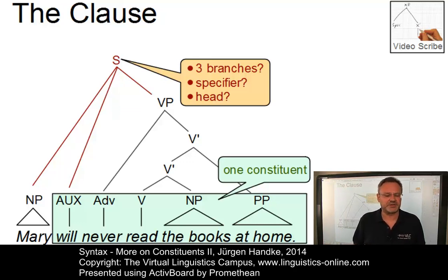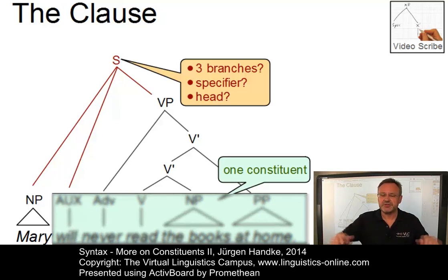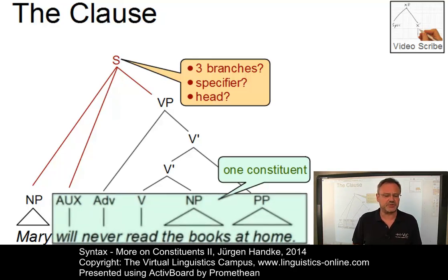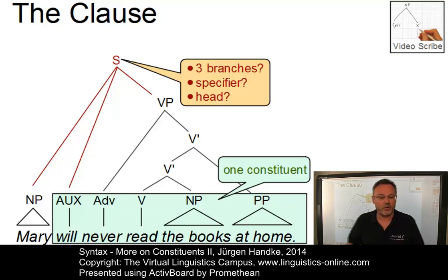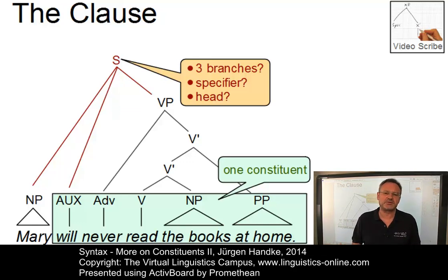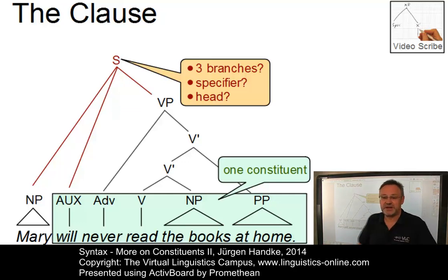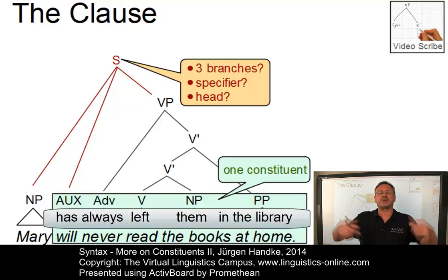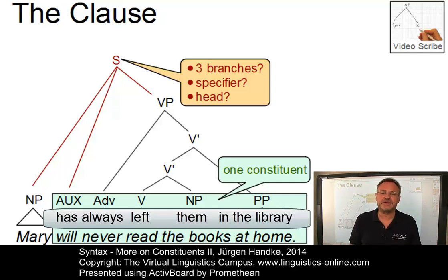Take for example the sentence fragment test: Who will never read the books at home? Your answer could be Mary, leaving out the entire rest, indicating that this is a constituent. Or take the coordination test. We can build structures where the auxiliary and the verb phrase — will never read the books at home — can be coordinated with other auxiliary–verb phrase structures, supporting their constituent status. For example: Mary will never read the books at home and has always left them in the library. This indicates we have two constituents of the same type, and has always left them in the library includes the auxiliary verb too.